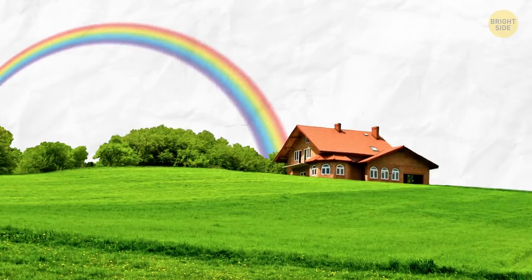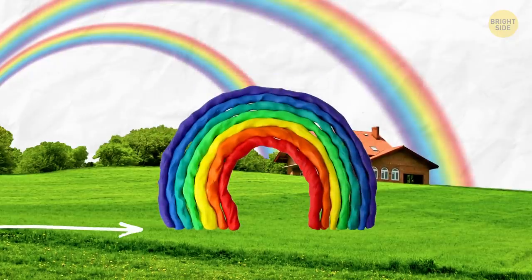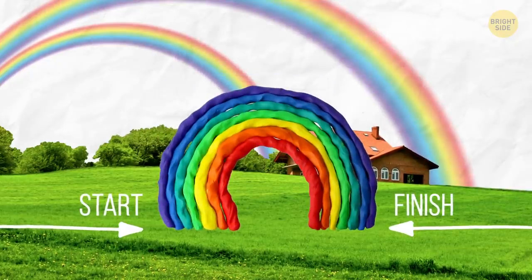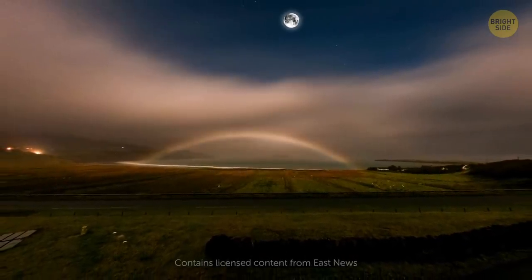Rainbows are a frequent occurrence. A double rainbow, not so much. A rainbow with a beginning and end, even less. But the rarest rainbow is a moonbow. It shows up at night thanks to moonlight.